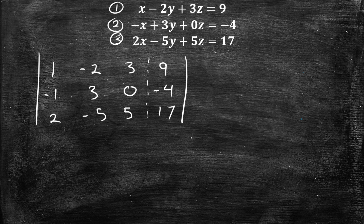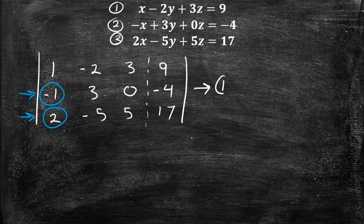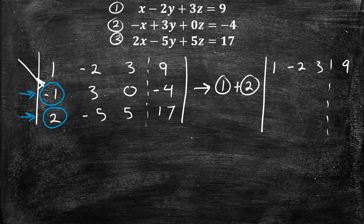So this is our matrix. What we want to do is make the entries in the first column below the leading 1 into zeros. We can add rows, multiply rows, or subtract rows. Let's start by adding row 1 plus row 2 to eliminate that entry and make it zero. Row 1 stays the same: 1, negative 2, 3, 9. Row 2 then becomes 0; negative 2 plus 3 is 1; 3 plus 0 is 3; and 9 plus negative 4 is 5.